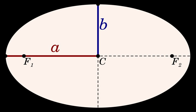In an ellipse, the semi-major axis is the geometric mean of the distance from the center to either focus and the distance from the center to either directrix. The semi-minor axis of an ellipse runs from the center of the ellipse to a point halfway between the foci, out to the edge of the ellipse. The semi-minor axis b is related to the semi-major axis a through the eccentricity e and the semi-latus rectum l.